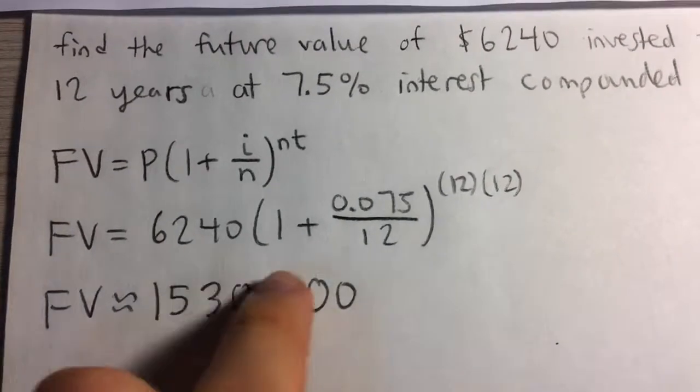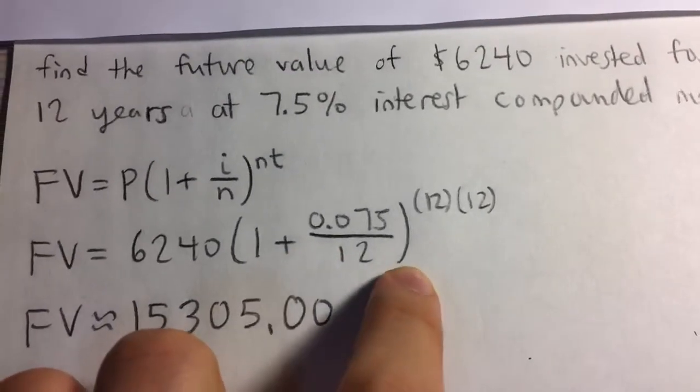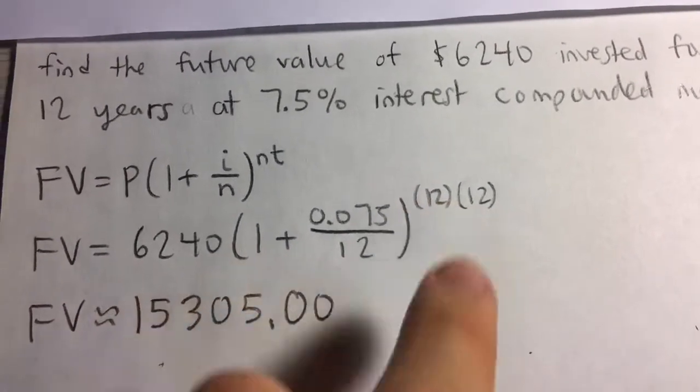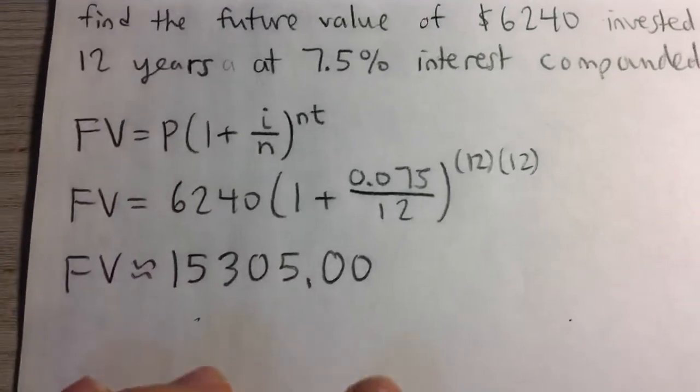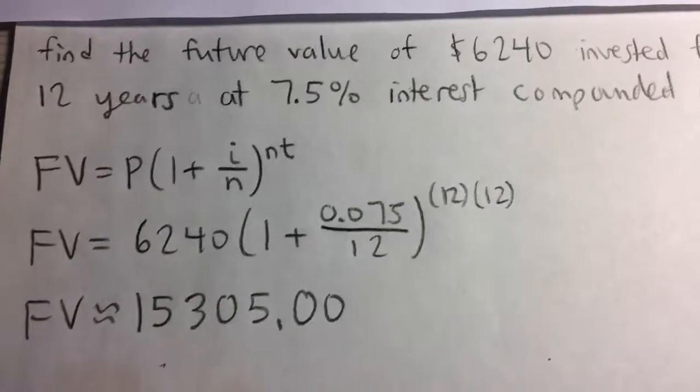If you evaluate this on a calculator, $6,240 times this, which is all raised to the 144 power, you'll get an answer of approximately $15,305.